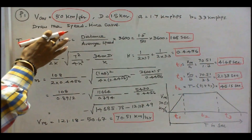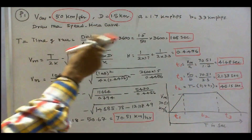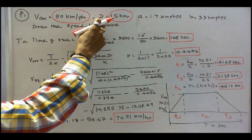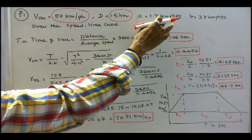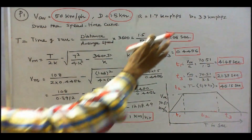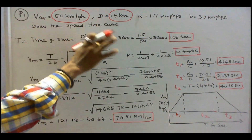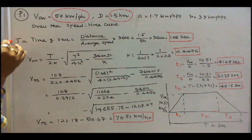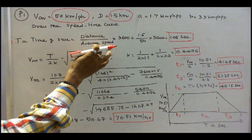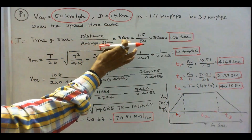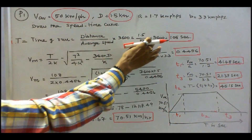In this problem, average speed is given as 50 km per hour, distance between two stations d is equal to 1.5 km, acceleration is 1.7 km per hour per second, and retardation is 3.3 km per hour per second. Step 1: find T, the time of run, equal to distance divided by average speed into 3600, that is 1.5 divided by 50 into 3600, which equals 108 seconds.